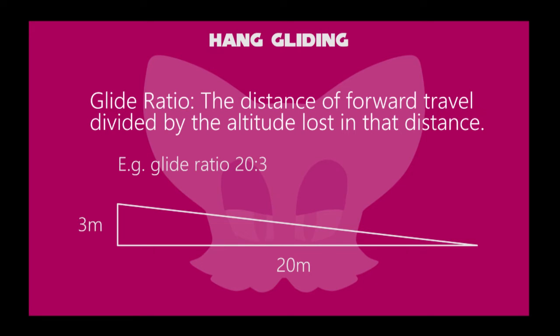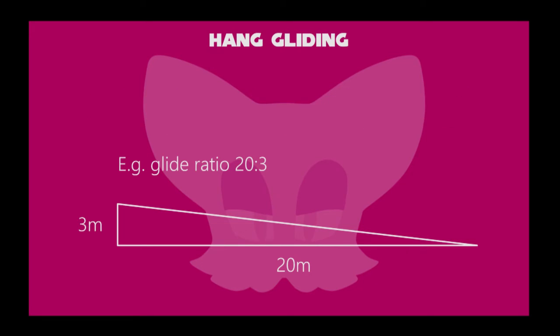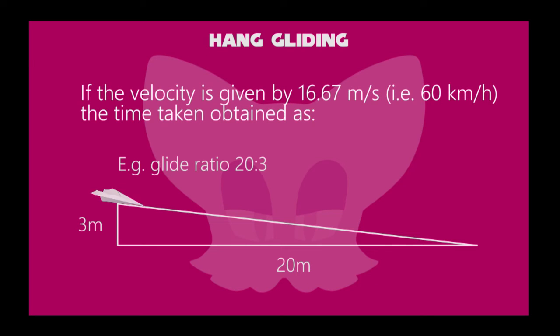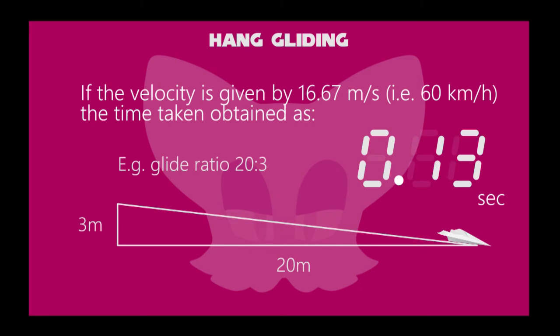How much time to complete the gliding ratio? The velocity is given by 16.67 meters per second. Divide it by 20.22 meters, we get 0.82 seconds.